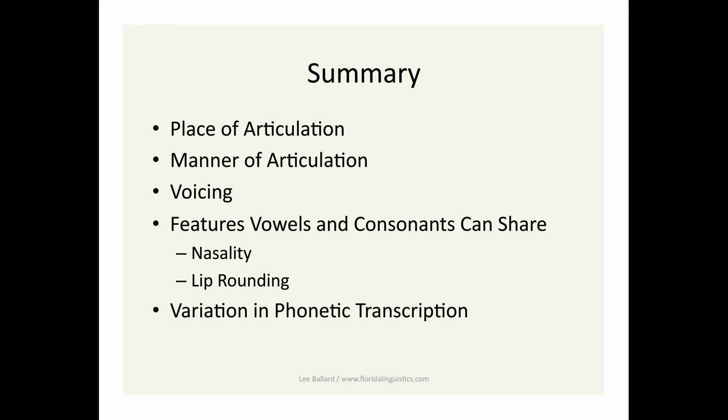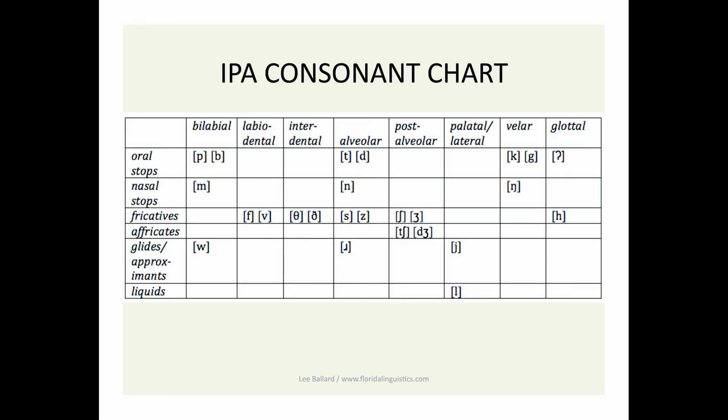Anyway, when linguists describe a consonant, they usually say something like voiceless velar stop, or voiceless alveolar oral fricative, if they include nasal versus oral. Here's the order you should follow when describing consonants. If you want to include other features, like for the first consonant in ship, which has some lip rounding, you would be safe to say something like, it is a voiceless post-alveolar oral fricative with lip rounding.